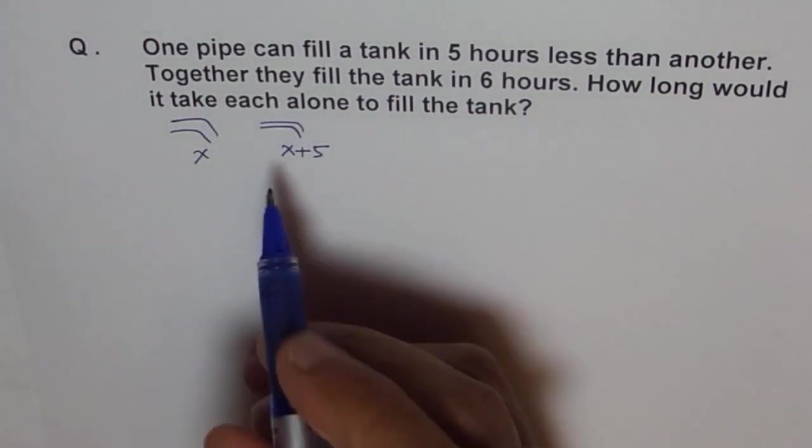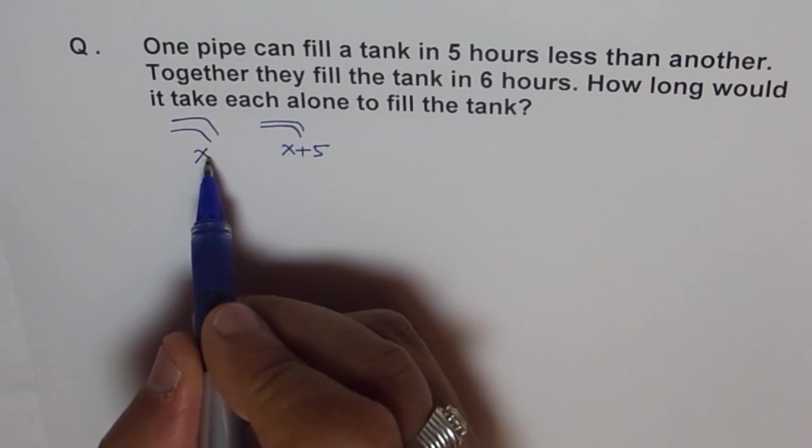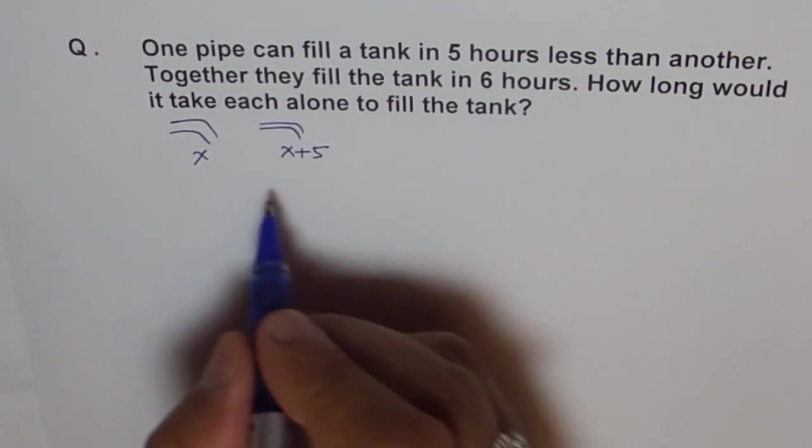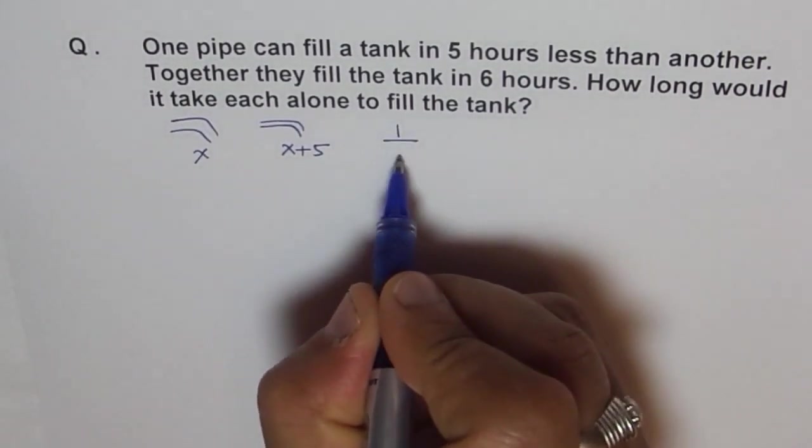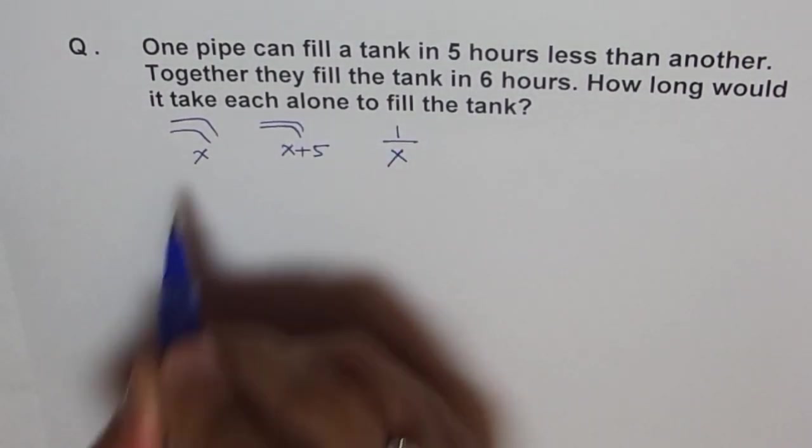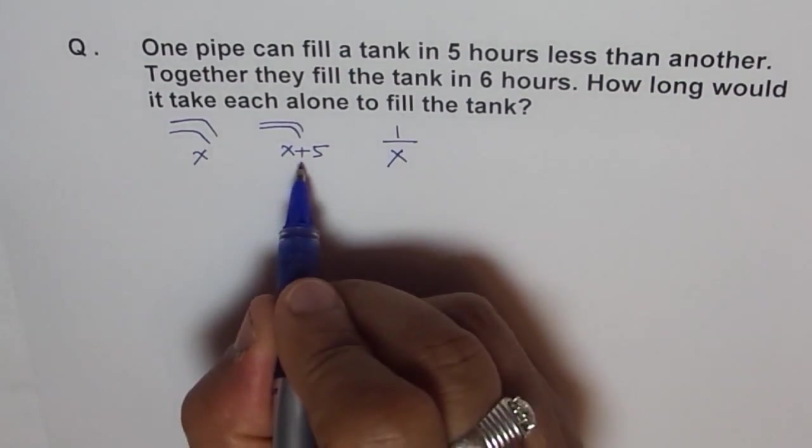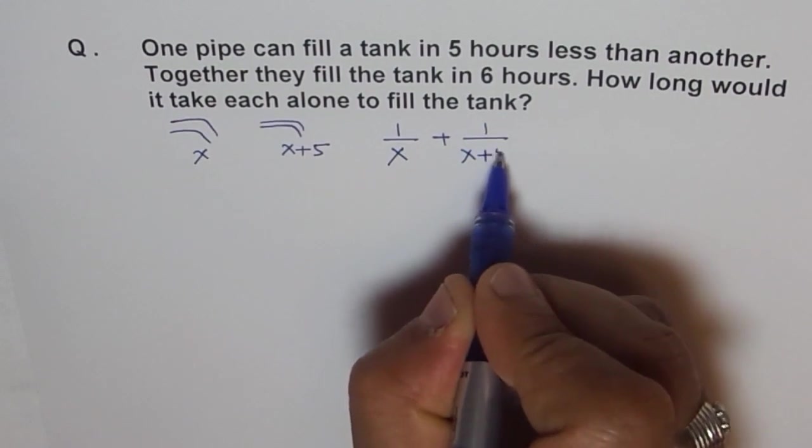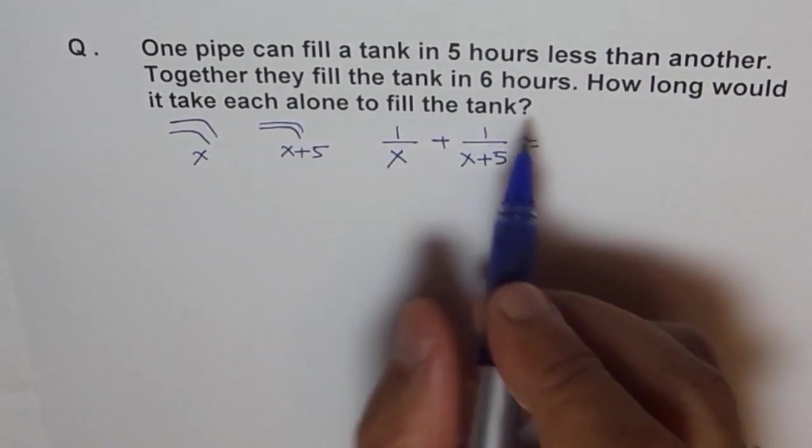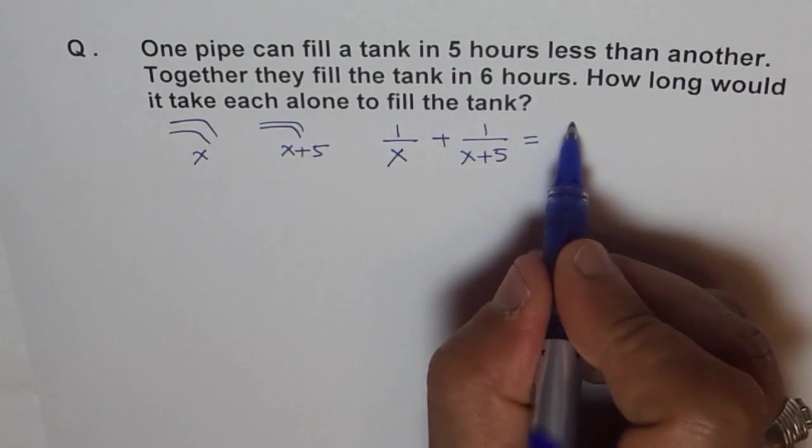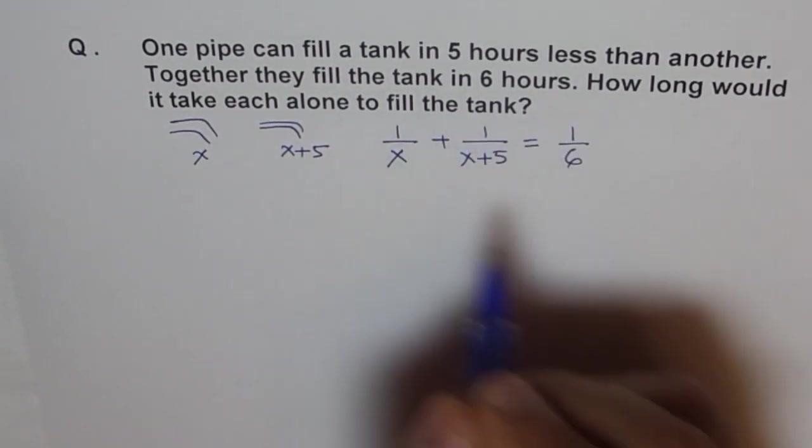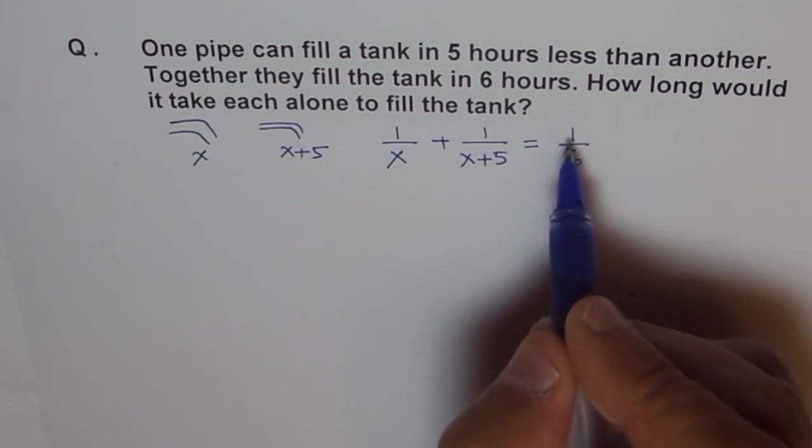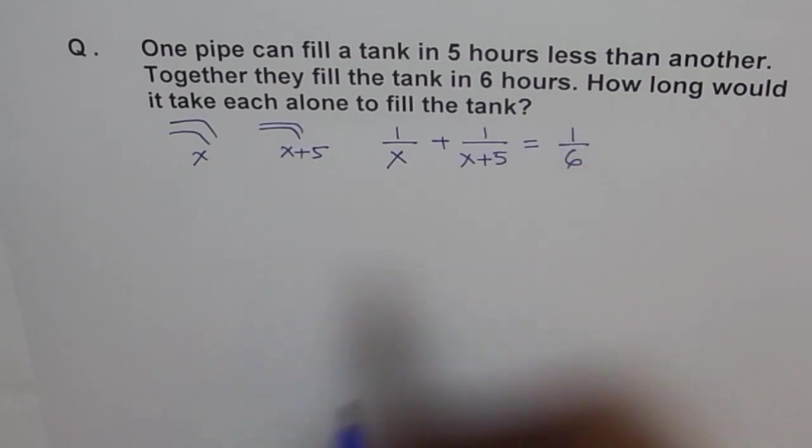Therefore, when they work together, how much of the tank is filled with this pipe? With this pipe it will be one over x filled in one hour, and with this pipe it will be one over x plus five. And in all, in one hour they will do one-sixth of the tank. Because in six hours they will do one full tank. In one hour, one-sixth of the tank.